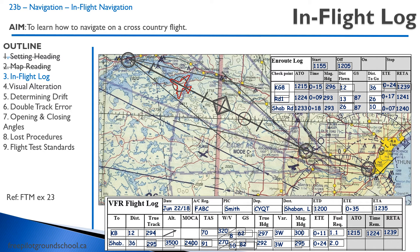Here we are at the second checkpoint, doing the same thing. We write down our time over what I call Shabando Road — 12:33 — it took us 18 minutes from the set heading point. I always calculate from the actual set heading point, not the last checkpoint, because we want to average everything out; the farther we fly, the more everything averages out. We flew 26 miles distance to go, then a revised ETA — you can tell the ETA has stayed within about a minute.